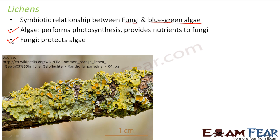One more thing to note is that one fungus can form lichen with a variety of algal species. It is not necessary that only one fungus forms lichen with only one type of algal species — since there are many types of blue-green algal species, they can form lichen with a variety of them.